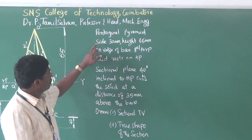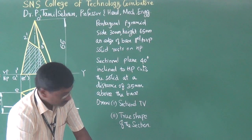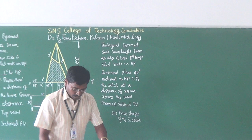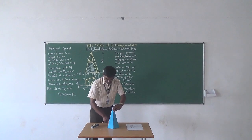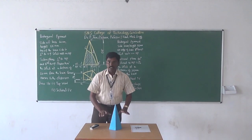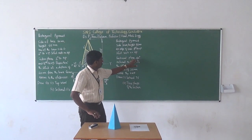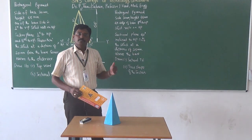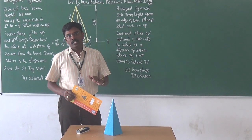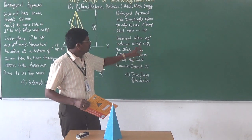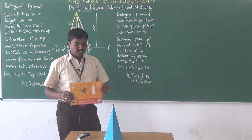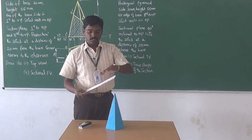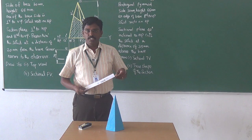It is a pentagonal pyramid: side 30mm, vertical height 65mm, one edge of the base parallel to VP, so the solid lies with that edge parallel to VP and rests on HP. The sectional plane is 40 degrees inclined to HP. Perpendicularity is not mentioned, but we know a cutting plane must be perpendicular to one plane. Since it is inclined to HP, it must be perpendicular to VP.